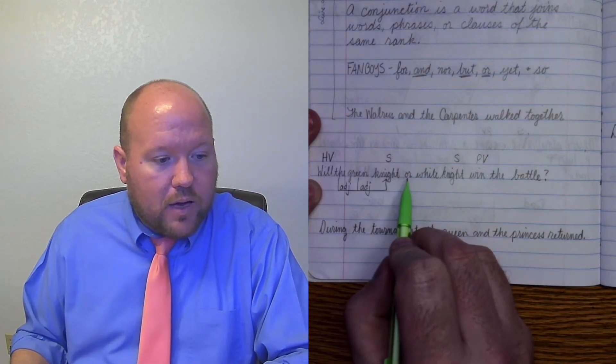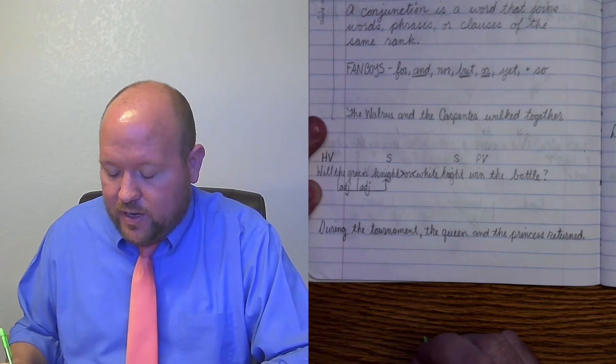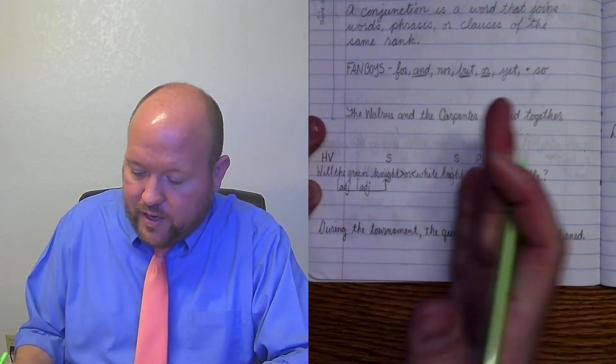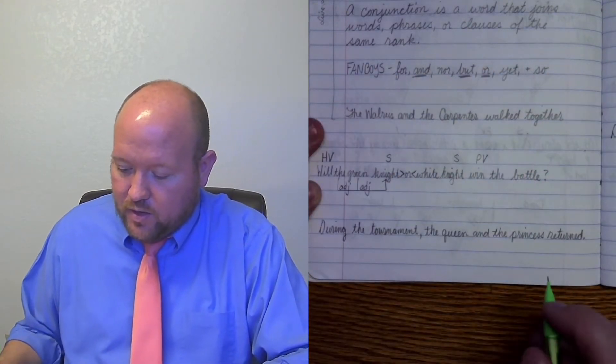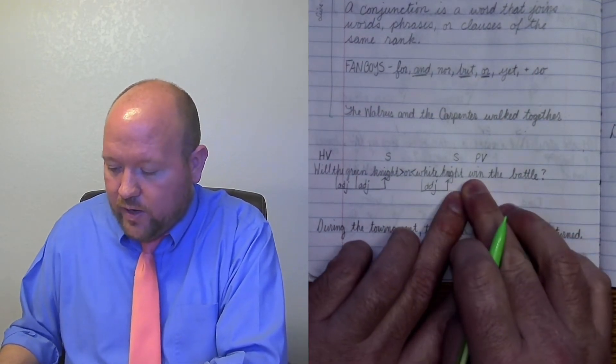Now we have the word or, and the way we identify or is we're going to use little arrows that point to it. So it's like a greater than and a less than sign that point towards it and then away. So the mouth of the sign is facing away. So white here is modifying knight, so it's an adjective. Win, we've already done it.